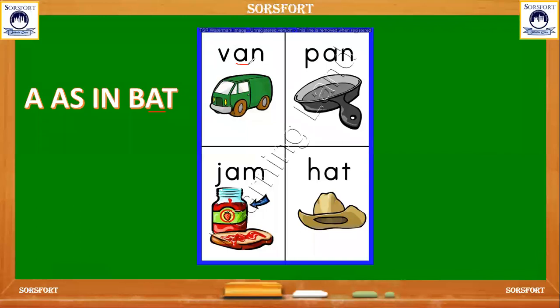Where is A in the pan? P, A, N — pan. A is in the middle of P and N. And where is A in the jam? A is in between J and M. J, A, M — jam.